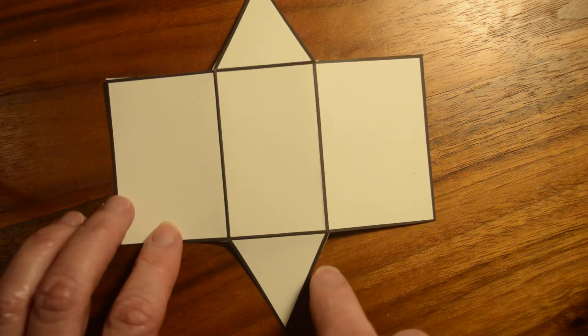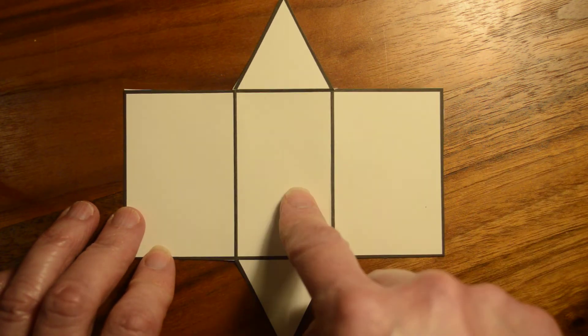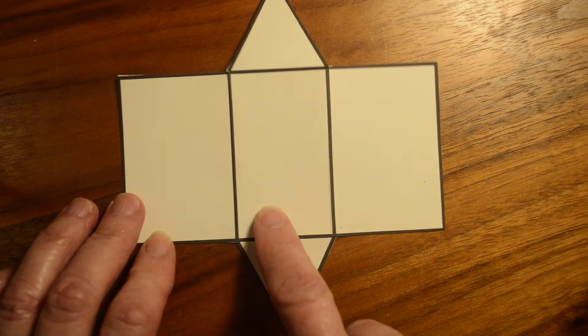But anyway, as we try and figure out the surface area of something like that, we'll have to think about the three different rectangles that we have there and the two triangles.